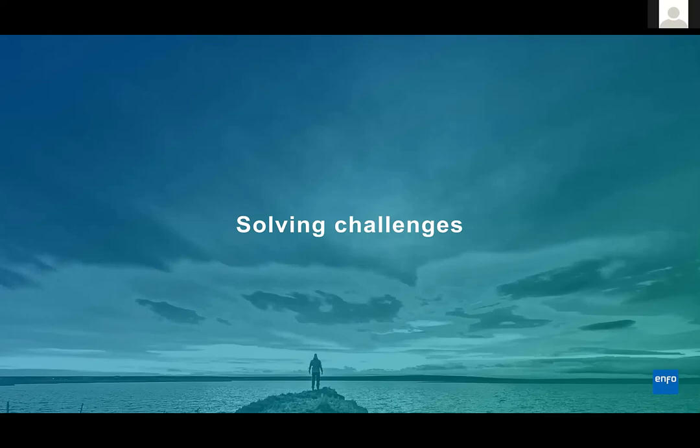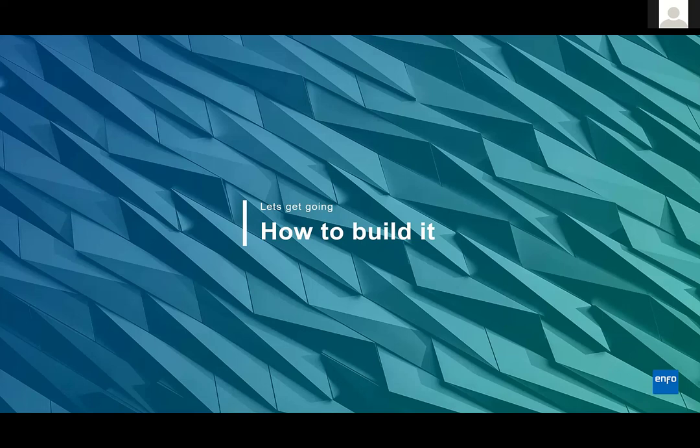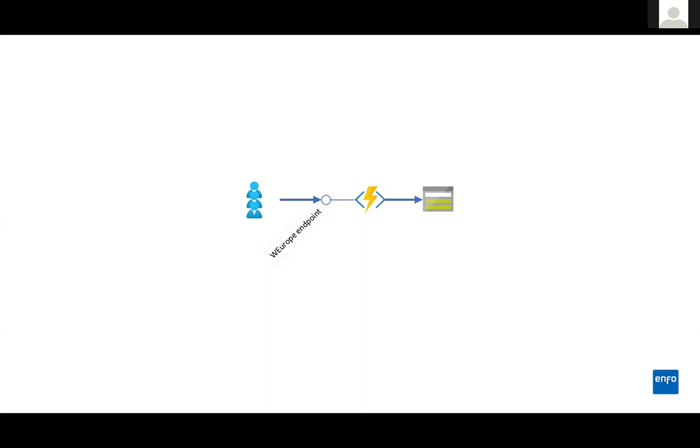It's getting quite complex quite quickly, especially when you add things like wanting to resend information. So let's move from posing problems and try to solve these things instead. How would I build this? How would I solve this? Here's a suggestion on some services that might help. Let's say you have an endpoint — since this is a very Eurocentric example, it's of course a West Europe endpoint being called by your users, it's a function, it gets data from a storage.